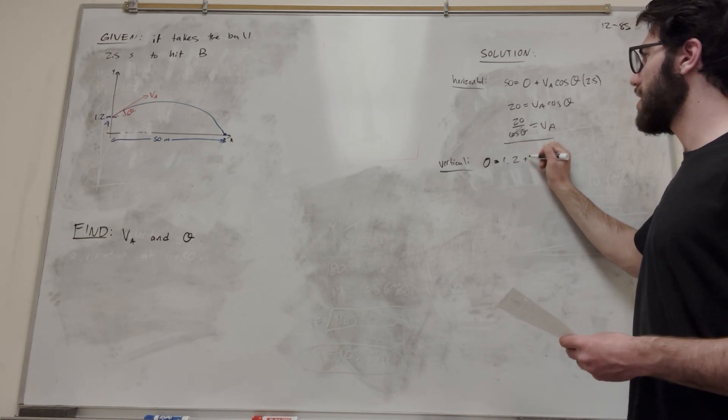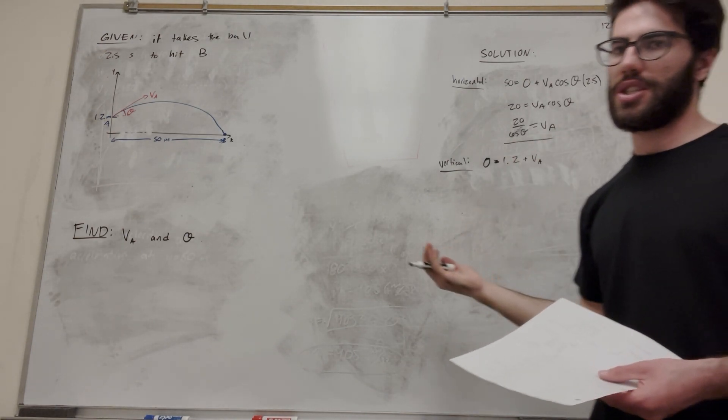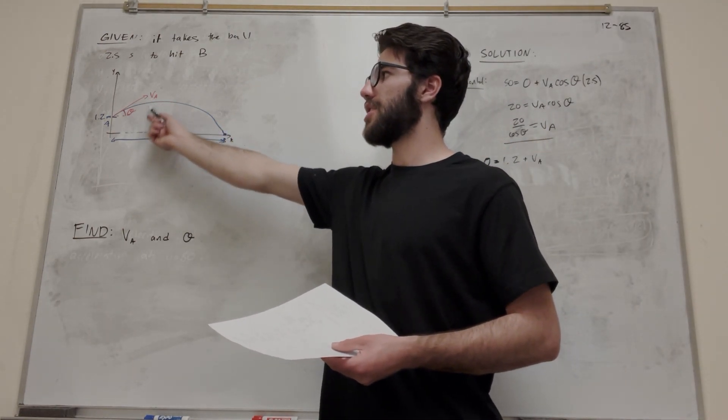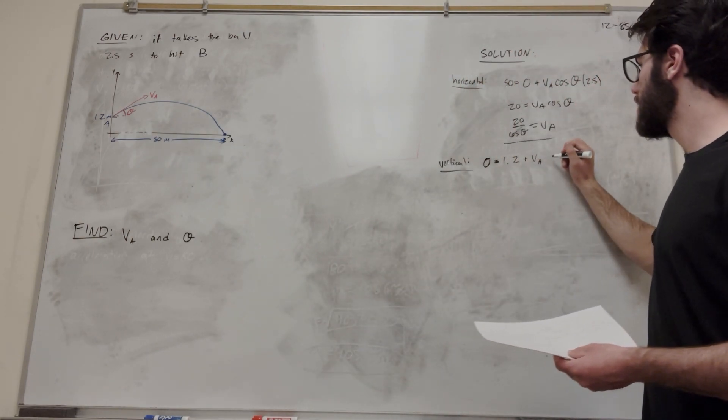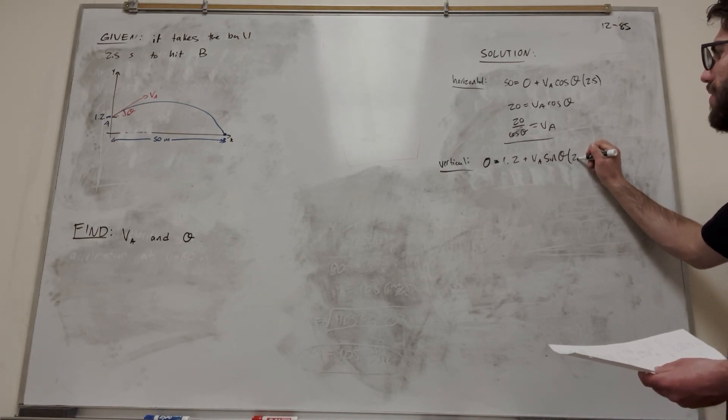Plus velocity time. So we start with velocity initial, but then we have to find just the y-direction. So if we wanted to find just the y-direction, we're going to take sine of theta. And then multiply that by time for the equation. So this is going to be another 2.5.